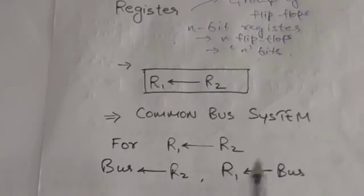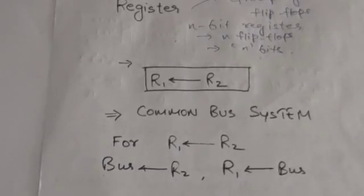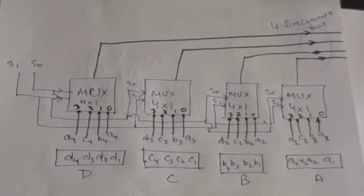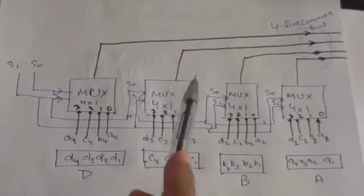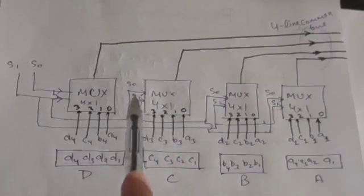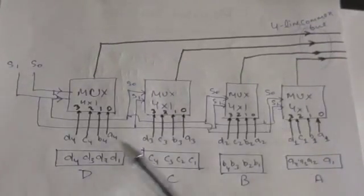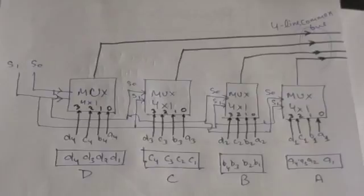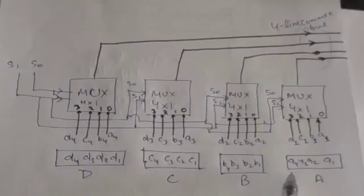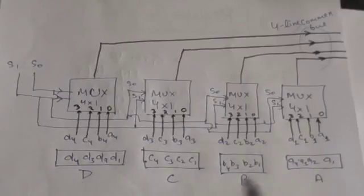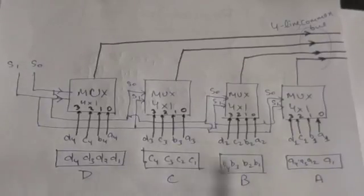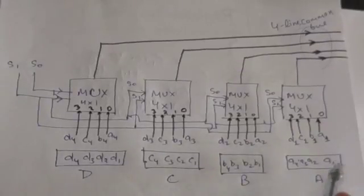Now, how do we transfer data from a register to the bus? One way to do this is by constructing a common bus with multiplexers. For example, suppose there are four registers and each is capable of storing four bits — registers A, B, C, and D — each one is four bits wide.